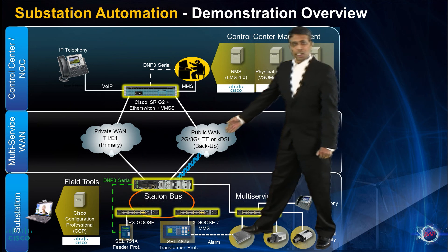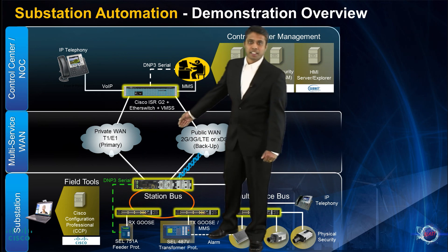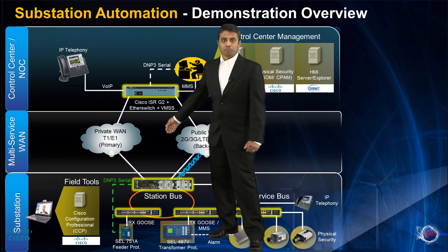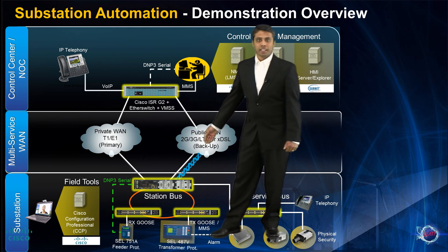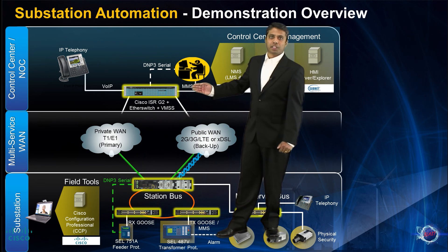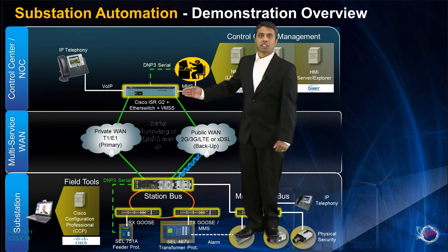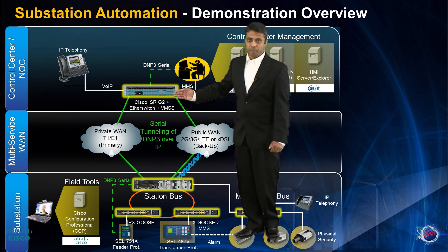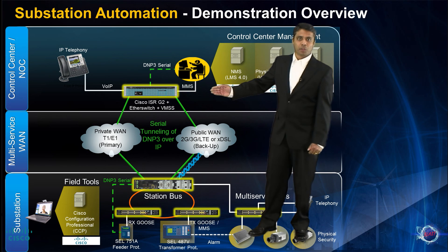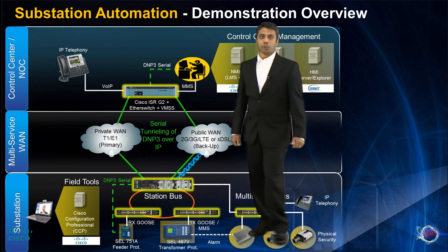Relays using legacy serial interfaces are directly connected to the router at the substation. The raw serial data is transported across the WAN to the control center aggregation router using protocols like B-STUN, or block serial tunneling. This aggregation router provides the serial connections to the HMI application, which can now talk to the relay as if it was directly connected to it.